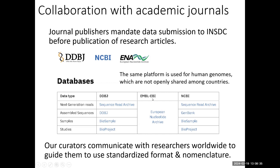At EMBL-EBI, the European site likewise provides a collective database named European Nucleotide Archive or ENA. NCBI counterparts in the United States are categorized into four: Sequence Read Archive for NGS, GenBank for assembled sequences, and BioSample and BioProject. And at these three institutes there are professional curators who communicate with all researchers worldwide to guide their submission of raw and basic data using standardized formats and language.